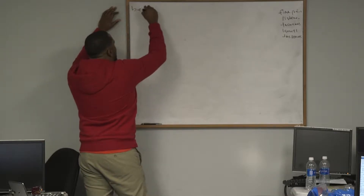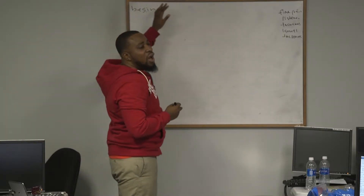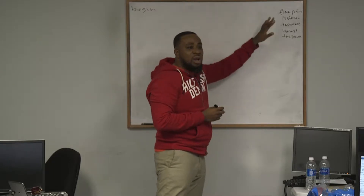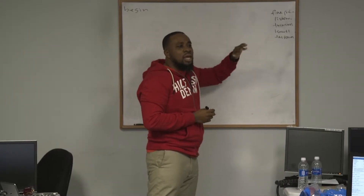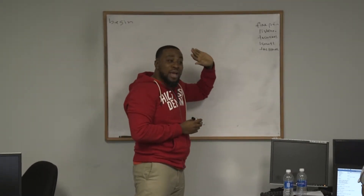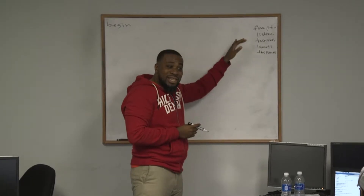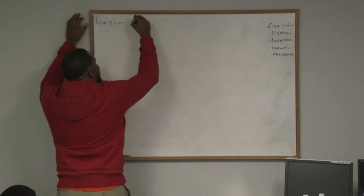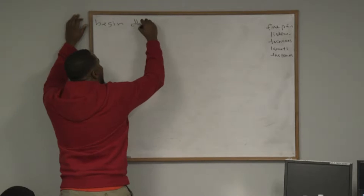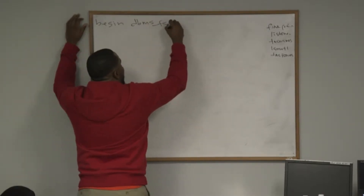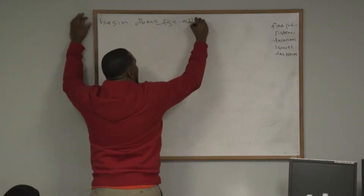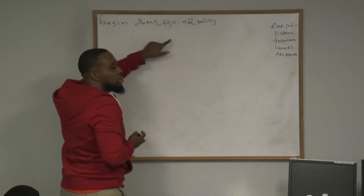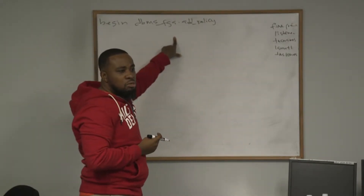Begin. Everybody, write all this on one line — don't put enter, enter. Write all this on one line, and put exactly how I write it on the board. Begin: DBMS underscore FGA dot ADD underscore POLICY. We have to add a policy.